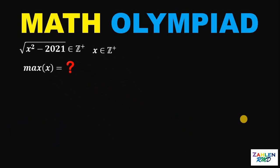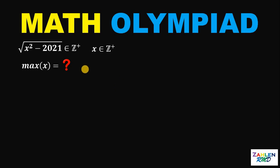Let's answer this question together. Our goal is to find the maximum value of x such that square root of x squared minus 2021 is a positive integer, wherein x is also a positive integer.